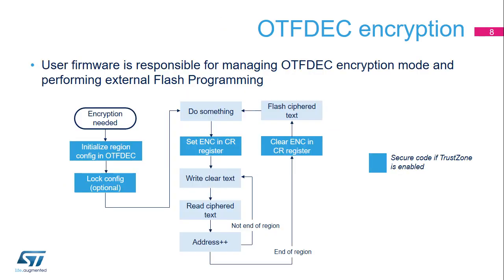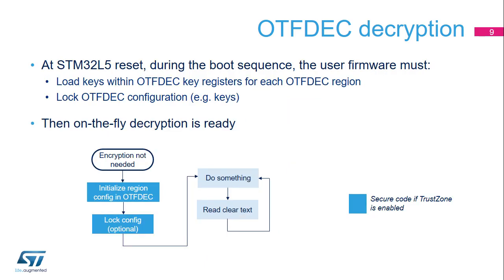The cipher data is stored in RAM. This slide describes the sequence used to encrypt the contents of a memory buffer, which must be implemented in secure code when TrustZone is enabled. User firmware is responsible for external flash programming. During the boot sequence, the user firmware performs the following initializations: loading keys into OTF-DEC key registers for each region; loading nonce, version, address start, and address end information for each region; setting RACE bits; and locking the OTF-DEC configuration — which is recommended. After these steps, on-the-fly decryption is ready.